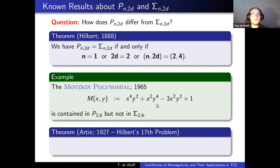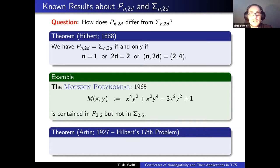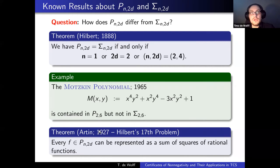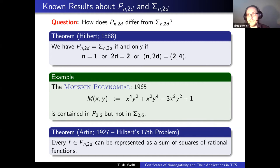A historical note: given that there are non-negative polynomials which are not sums of squares of polynomials, Hilbert asked — this was Hilbert's 17th problem — whether every non-negative polynomial can at least be represented as a sum of squares of rational functions. That is true, proved by Artin in 1927. Sums of squares play a distinguished algebraic role here — they're not just a natural certificate for computational reasons, but also special from an algebraic perspective.